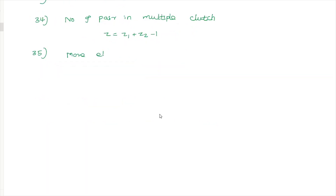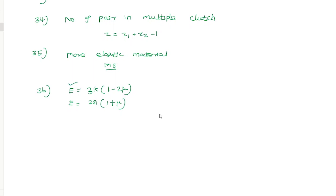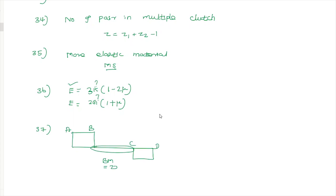The question on elastic material mentions rubber and Poisson's ratio. A higher Poisson's ratio means more elastic behavior. The material constants include E (Young's modulus), K (bulk modulus), and J (polar moment). For the shear force diagram, the answer where the bending moment is maximum corresponds to shear force equal to zero.